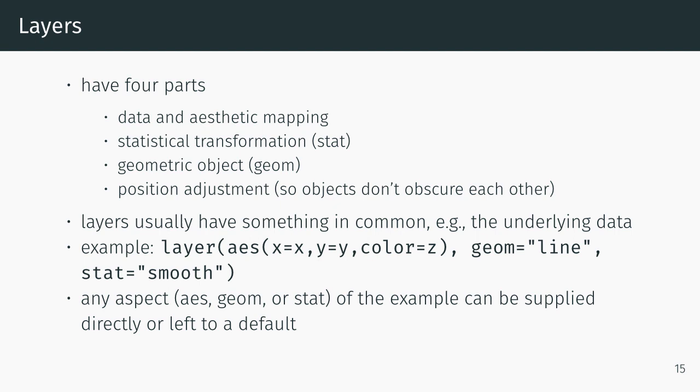Geom line refers to one of about 30 different possible geometric objects, and stat smooth refers to one of about a dozen possible statistical transformations. Any aspect can be supplied directly or left to a default, and it's very common to leave parts or sometimes most of what we're doing to defaults.